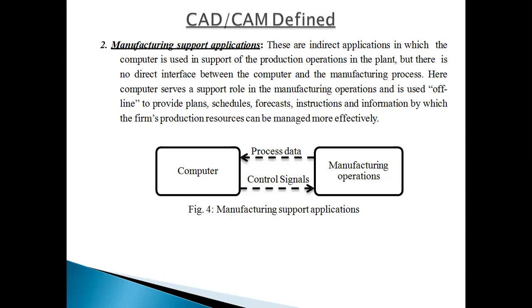There is no direct interface between the computer and the manufacturing process. The computer gives offline support to the manufacturing — that is called manufacturing support application. The computer makes one program; this program is not directly sent to the VMC. You copy the program to a pen drive, go to the VMC, and give input to the VMC as per that program — that is manufacturing support application.